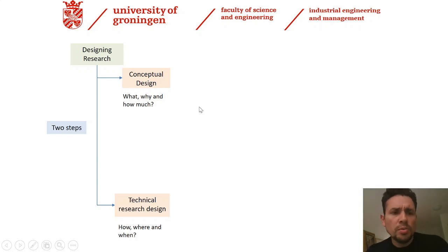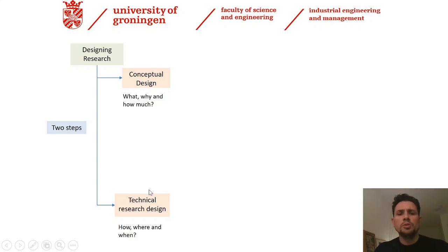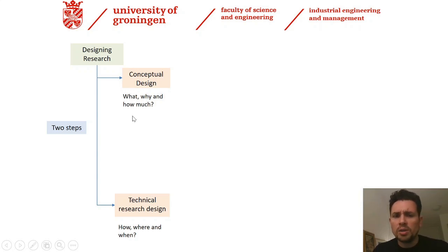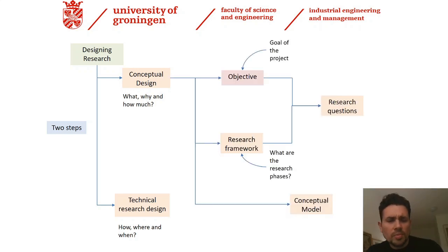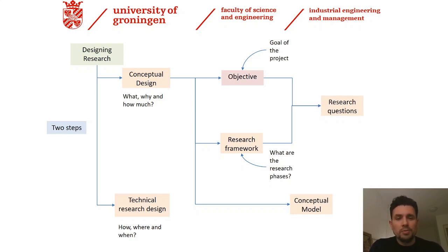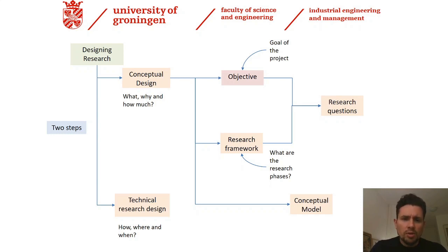The course unit is divided in two main steps: the conceptualization or conceptual design, and the operationalization of the research project in the technical research design step. First we answer what, why, and how much — and later on we will address the questions how, where, and when. The idea is to properly design an objective, which is the goal of the project — what we want to achieve.